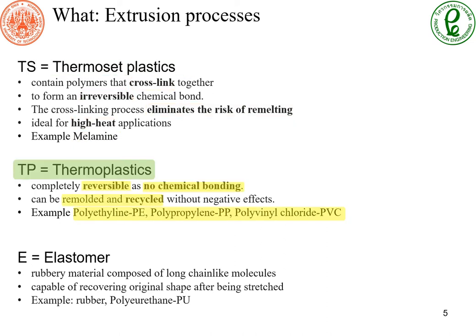Thermoplastics contain polymer chains with no chemical bonding. So we can remelt and recycle thermoplastics. These types of plastic are also in our everyday life. Polyethylene (PE) is used to make plastic bottles. Polypropylene is used for food packaging. Polyvinyl chloride (PVC) is used for piping.